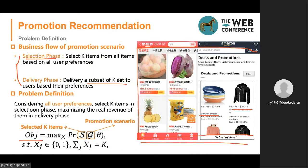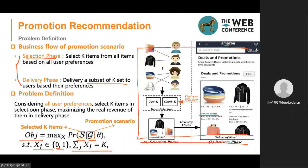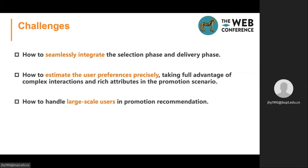The problem definition is as follows. Considering all user preferences, we aim to select k items in the selection phase and maximize the real revenue in the delivery phase. Here is the objective function: xj is 0 or 1; if xj equals 1, it means item j will be selected, and the sum over xj equals k, meaning we only select k items. The challenges are: how to seamlessly integrate the selection and delivery phases; how to estimate user preference precisely using complex interactions and rich attributes; and how to handle large-scale users.